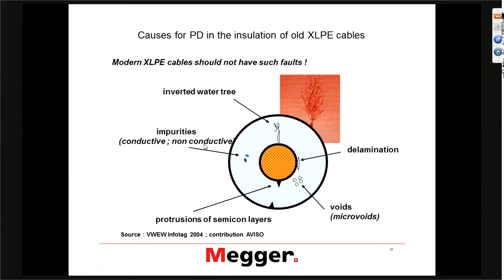In XLPE cables, we have older XLPE cables which were not as well quality controlled — you might have inclusions or foreign objects. Whenever you have that in a cable, you increase the dielectric stress or electrical field at that point, creating more stress in the insulation which ultimately creates issues. You might have impurities, voids, or — a very, very bad situation — delamination between the insulation and the semi-con. If you bend the cable too strongly, the insulation will separate from the semi-con and you might get an air pocket in between, and that's basically the end of the cable.